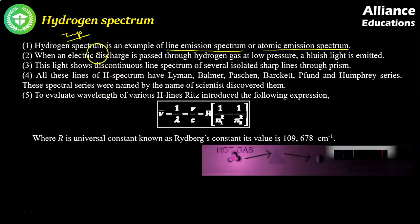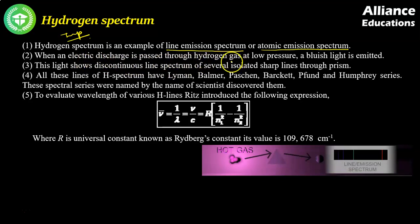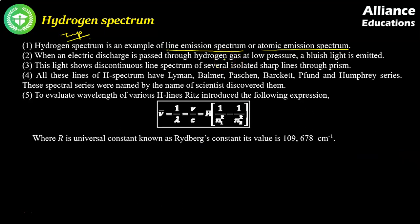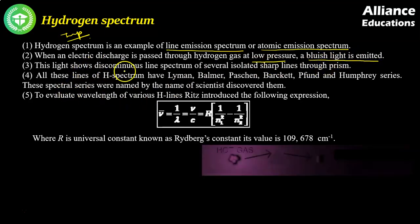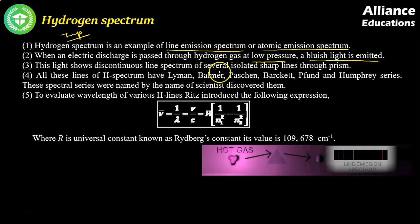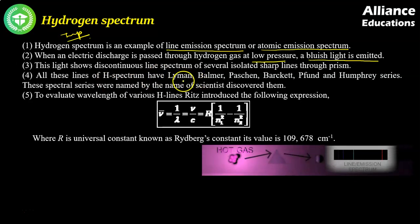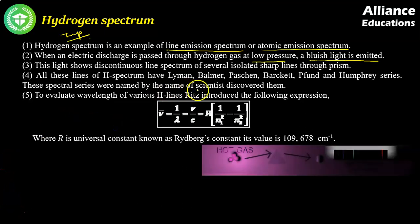And इसे obtain कैसे किया जाता है — अगर हम electric discharge को pass कर रहे हैं hydrogen gas में से at low pressure, means hydrogen gas में electric discharge pass कर रहे हैं low pressure पे, so हमें bluish light दिखाई देती है — hydrogen gas bluish light emit कर रहा है. And this light shows discontinuous line spectrum अगर हम इसे prism के through pass करके analyze करें. Hydrogen spectrum की जितनी भी lines हैं उन्हें different series में classify किया गया है — Lyman series, Balmer series, Paschen series, Brackett, Pfund and Humphrey series. इन series के नाम उन scientists के नाम पे रखे गए हैं जिन्होंने इन series को discover किया.